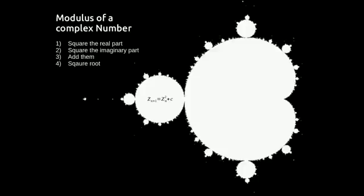In this video we're going to learn how to find the modulus of a complex number. All we have to do is follow four steps: square the real part, square the imaginary part, add them, and then square root the answer.